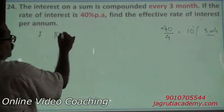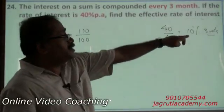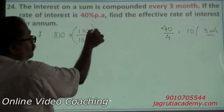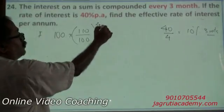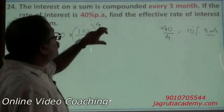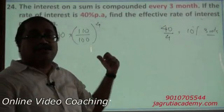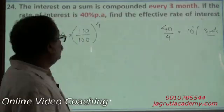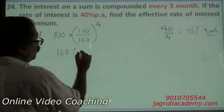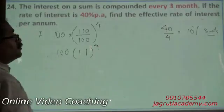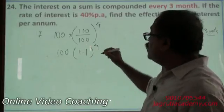I can take one method that 100 into 110 by 100 because there is 10% interest. So 110 by 100 to the whole power 4. How many quarters? 4 quarters in a year, therefore 4. I can take it in the form of fraction 110 by 100, 4 times, and then cancel it. Or you can take this as 100 into 1.1 to the whole power 4. What is this 1.1? That is 110 by 100. It is 1.1 to the whole power 4.